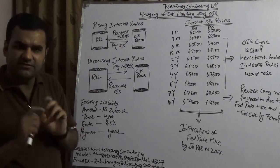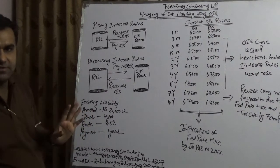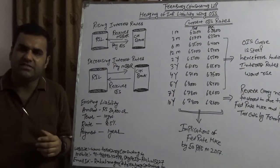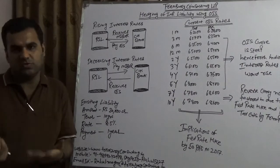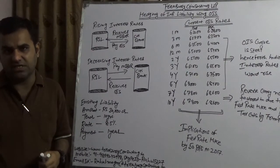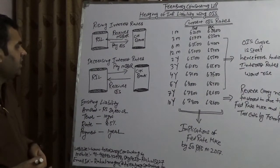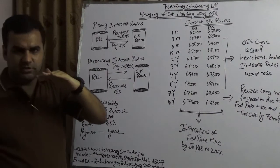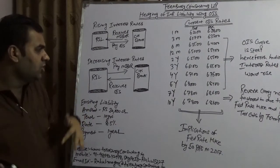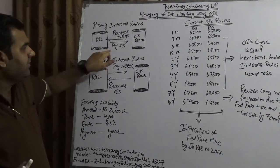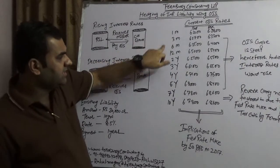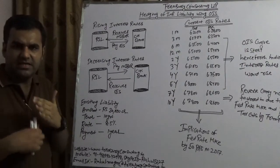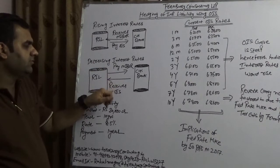OIS — Overnight Index Swap — has a fixed rate leg, and that is something we need to appreciate. So there are two legs: if Reliance Industries' treasury function believes that interest rates will rise — which is also my personal opinion, that the RBI will increase rates in the near future — then they would be receiving the MIBOR. On a daily basis the floating rate would be higher, the geometric average of the OIS would be greater, so they receive MIBOR and pay OIS. If Reliance thinks interest rates are decreasing, they would do the reverse — paying MIBOR and receiving OIS.